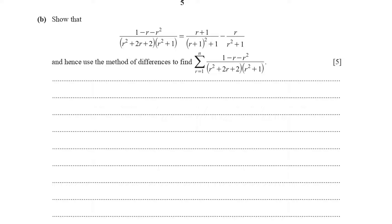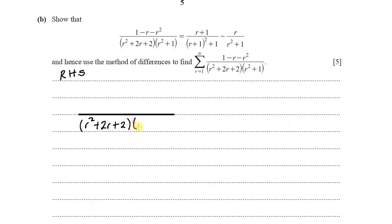We want to show these two fractions are equal, working from the right-hand side to derive the left-hand side. Finding the common denominator — which is the product of the two brackets — gives (r+1)² + 1, expanded as (r squared plus 2r plus 2)(r squared plus 1). Multiplying each fraction up accordingly: the first numerator becomes (r+1)(r squared plus 1) and the second becomes r(r squared plus 2r plus 2).